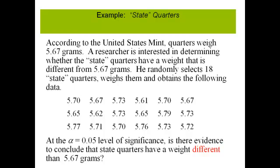That tells us that this is going to be a two-sided test. In other words, the researcher doesn't have any reason to believe before he collects the data whether the true mean weight of state quarters might be less than or greater than 5.67 grams. He just wants to know if there's evidence that their weight is different than 5.67 grams, and so that means we're going to have a two-sided or two-tailed test.